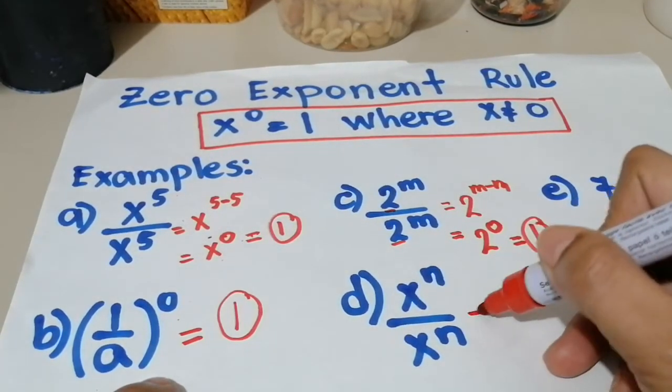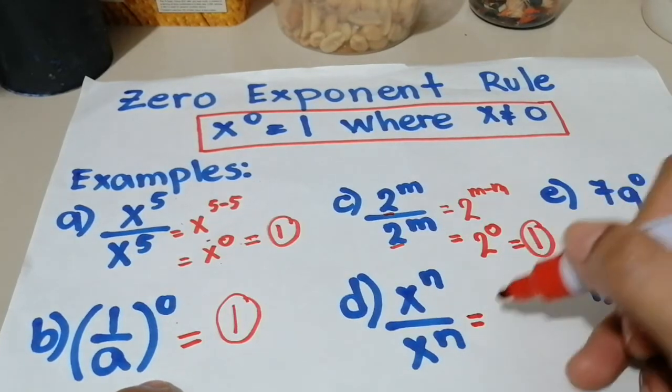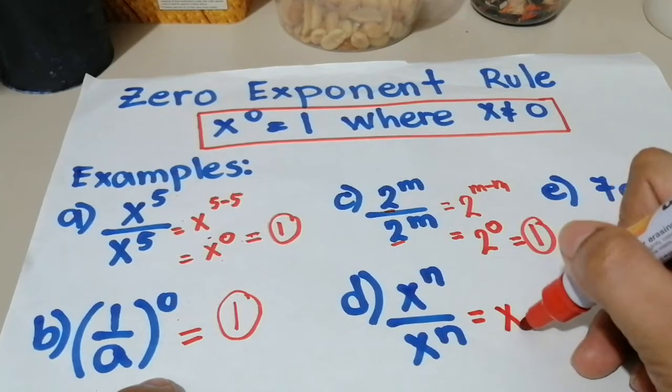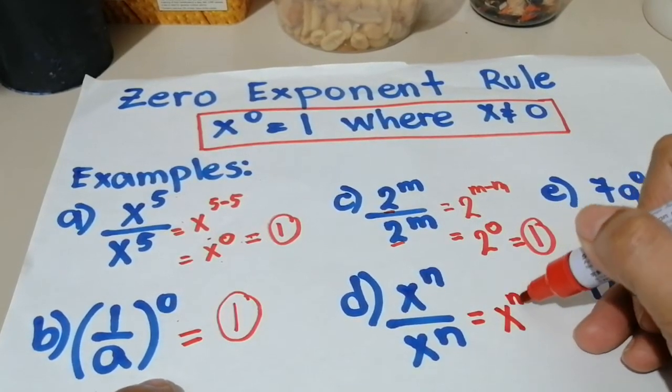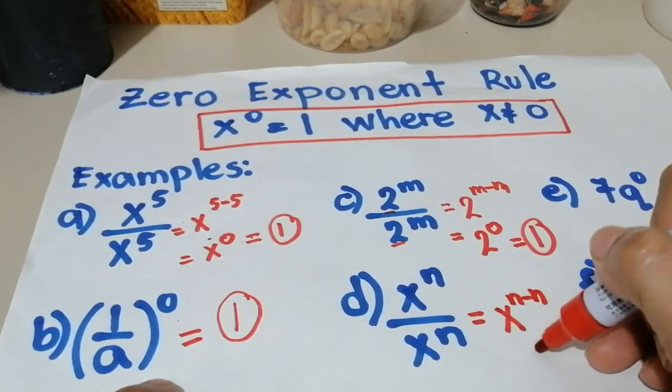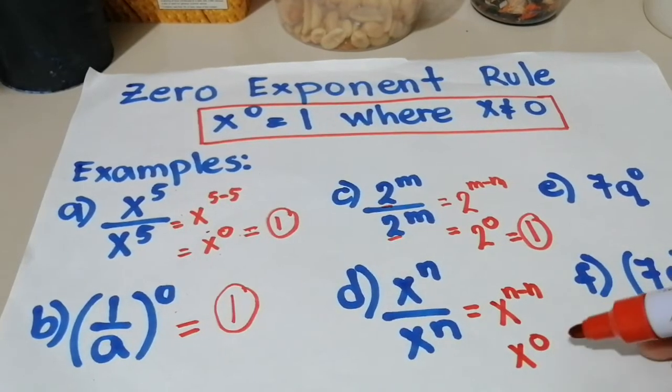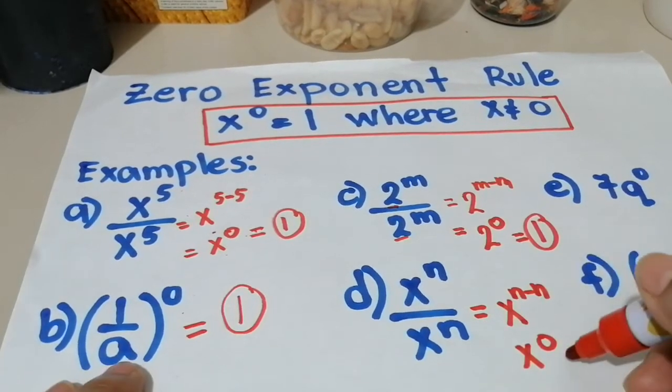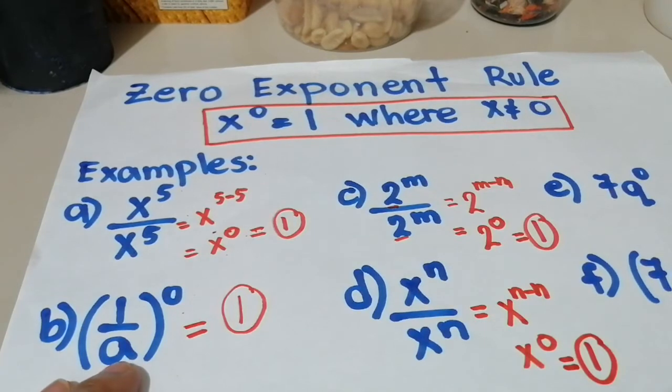Next is this, x raised to the n power over x raised to the n power. So again, division siya. So susubtract natin, copy yung base na x, and then subtract natin yung mga exponent na n minus n. So n minus n is 0, and then copy lang natin yung base na x. At dahil yung exponent is 0 dito, again, the final answer is equal to 1.